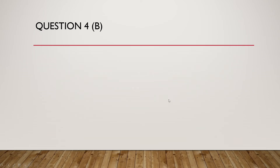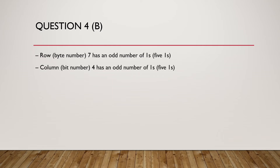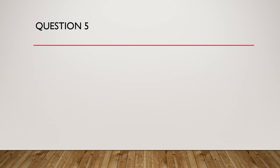Part B — how did we come to this conclusion? Row seven has an odd number of ones, and column four has an odd number of ones.